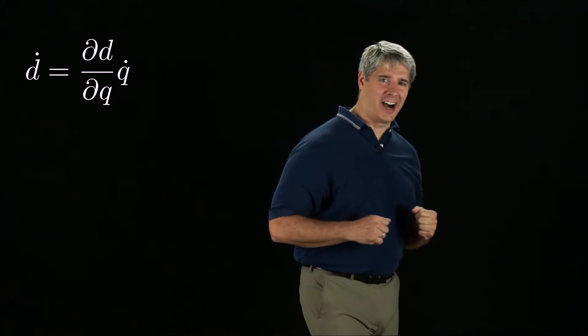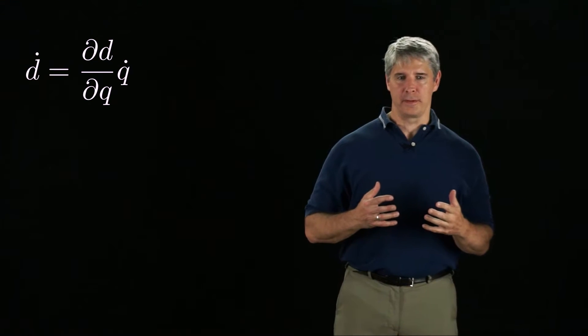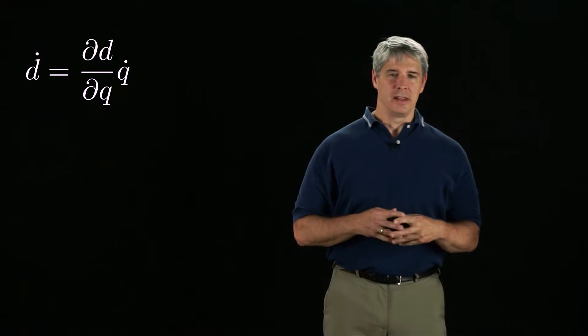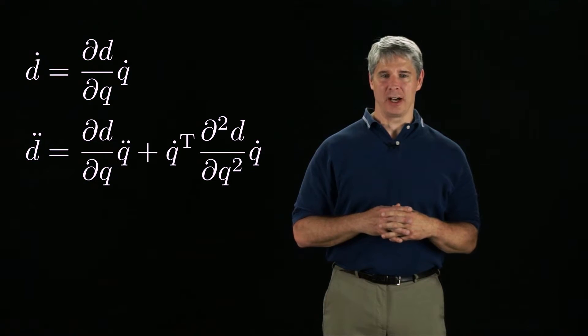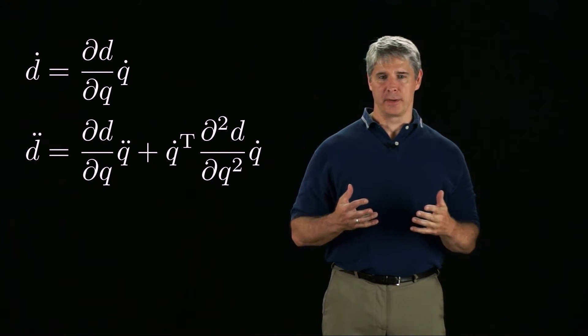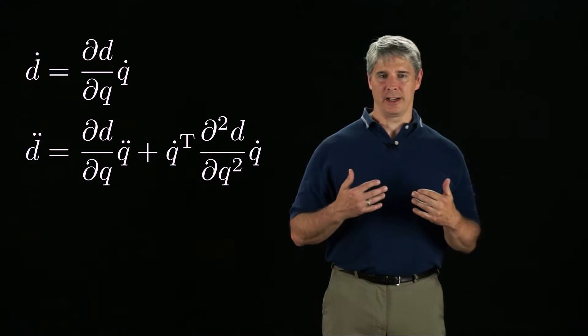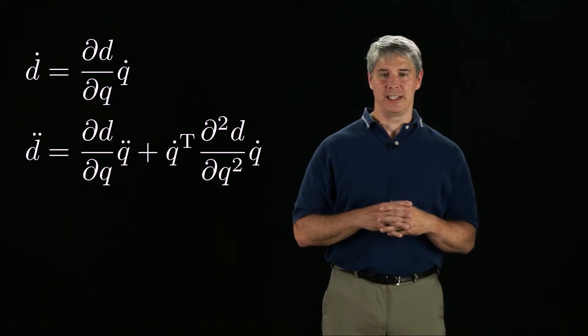If we assume the bodies are initially in contact, we can express the time derivative of the distance between two bodies as d dot equals the vector of partial derivatives of d with respect to q times q dot. The acceleration of d is d double dot, which is the sum of the partial derivatives times q double dot, and a velocity product term depending on the matrix of second derivatives of d with respect to q.